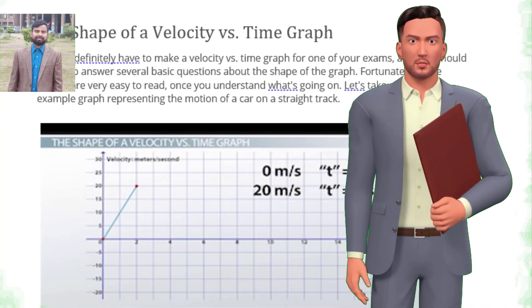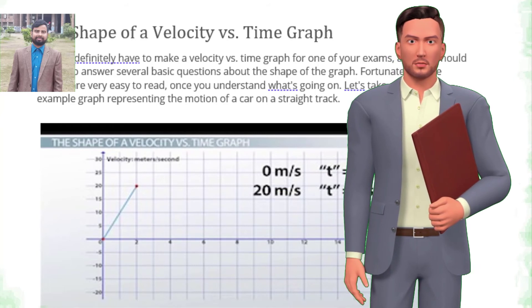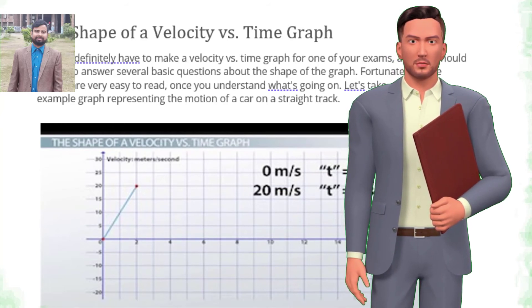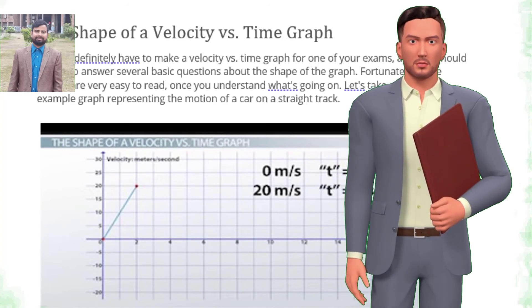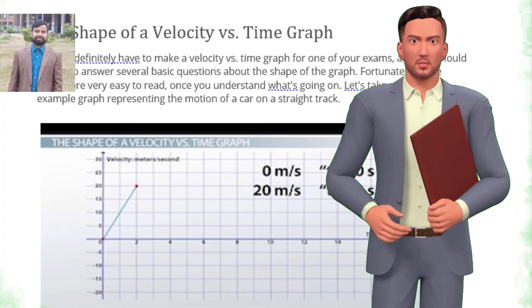Hopefully, you remember that a change in velocity is called acceleration. So, a rising line on a velocity versus time graph represents that the object is accelerating. Since the velocity is increasing, the acceleration is positive.